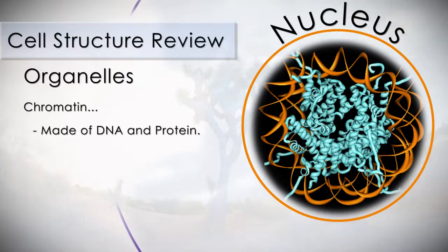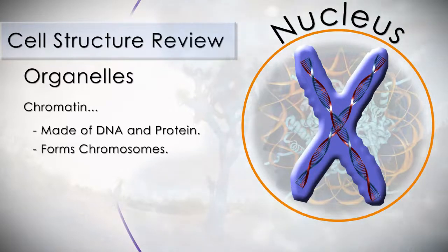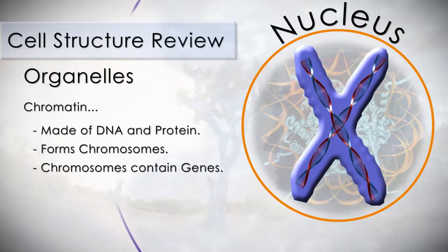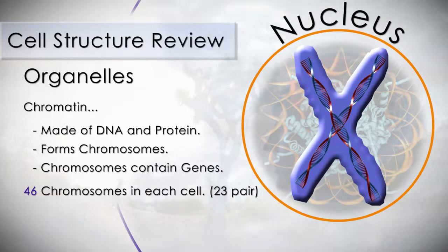Chromatin is a thread of DNA and protein, which together come to form chromosomes, which contain the genes. There are 46 total chromosomes in each human cell.